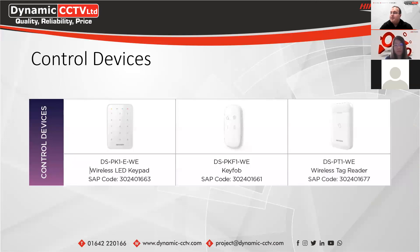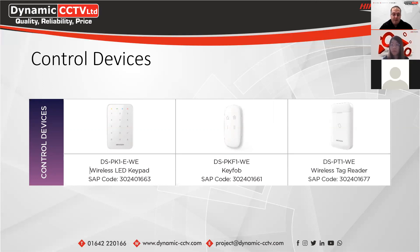We've also got the wireless keypad, key fob, and wireless tag reader — the different devices used to arm and disarm the system. The wireless keypad uses a code to arm and disarm. The key fob is generally used on your keychain like your car keys, using buttons to arm and disarm the site. And now we also have the wireless tag reader. Initially it was just on the hub itself, but now you can mount one near the exit and entry points and use it to arm and disarm the system as you leave the property.